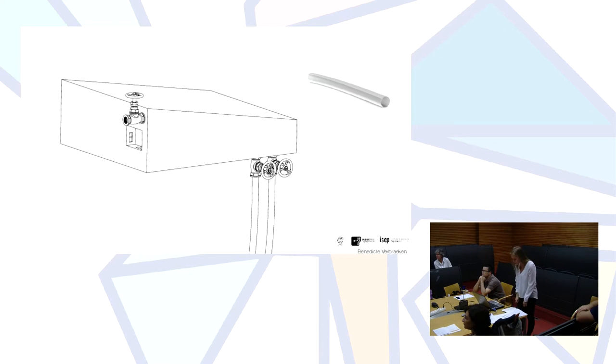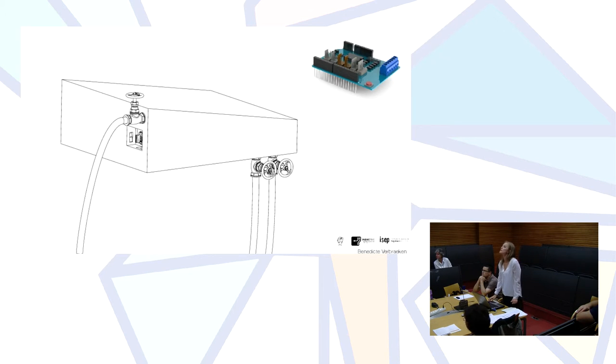Then the Arduino. To make sure that the whole system works the way intended, there needs to be a controlling board. That's why we included an Arduino board. The Arduino board controls the temperature sensor and the ultrasonic sensor. The temperature sensor makes sure the temperature doesn't exceed 50 degrees Celsius because the algae get damaged by that.